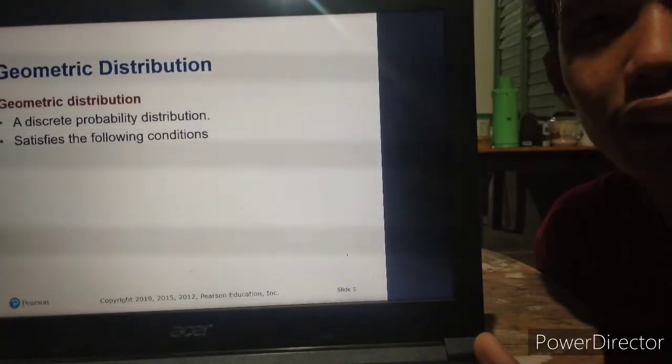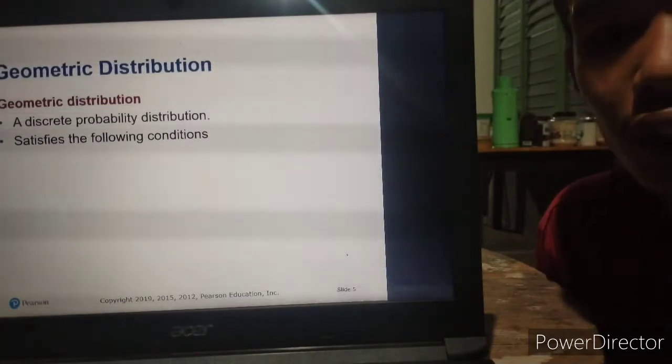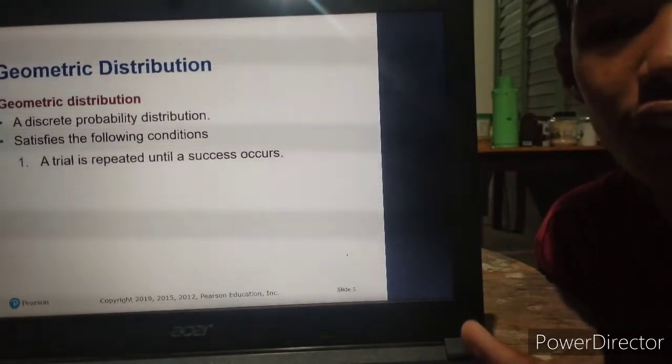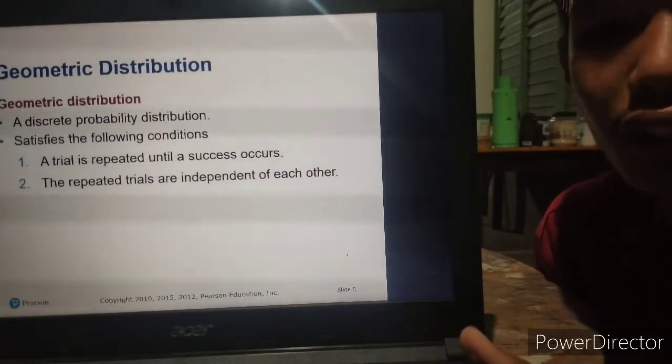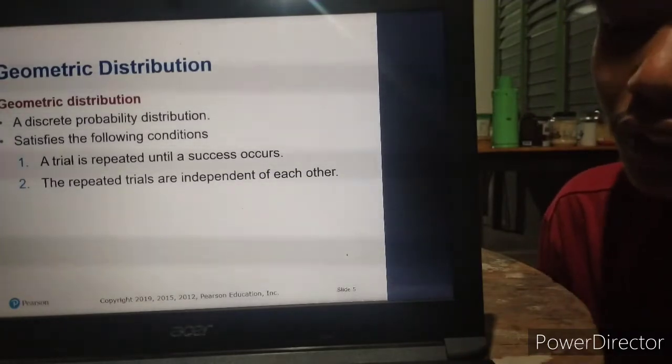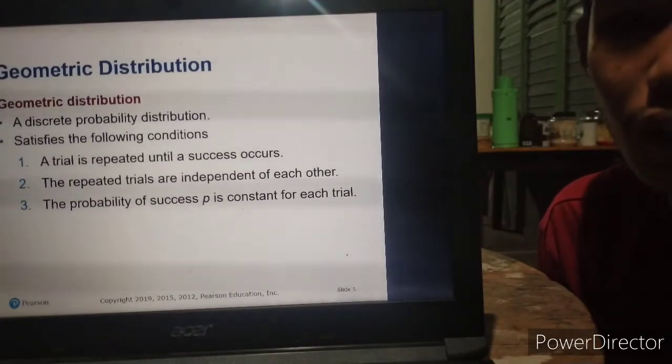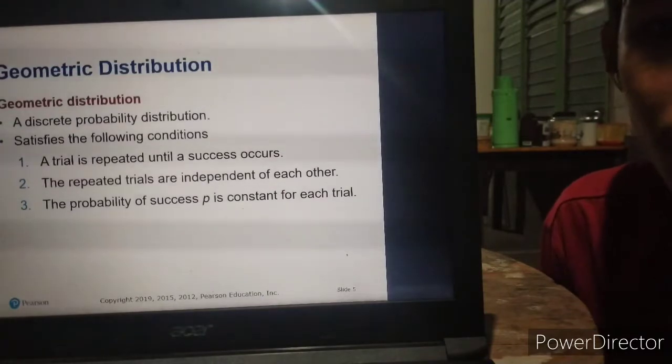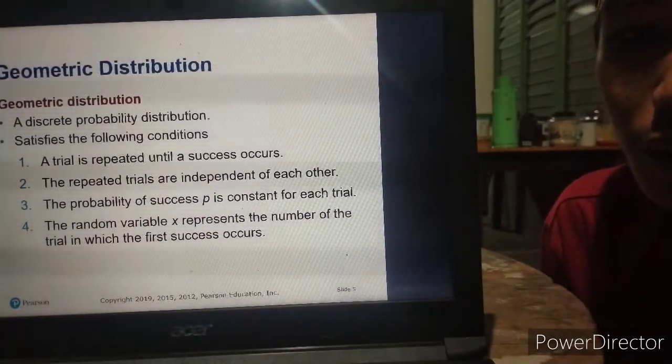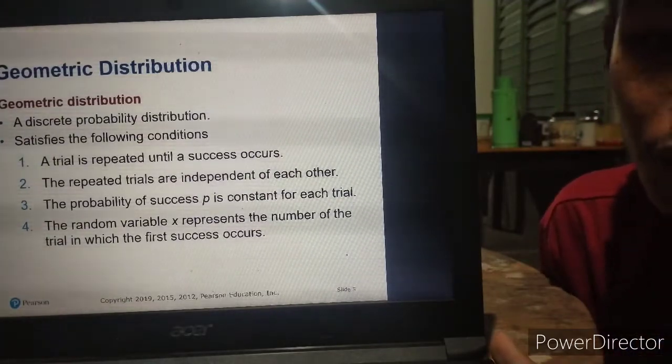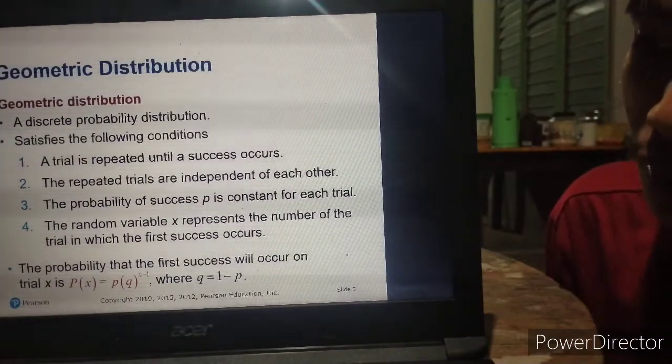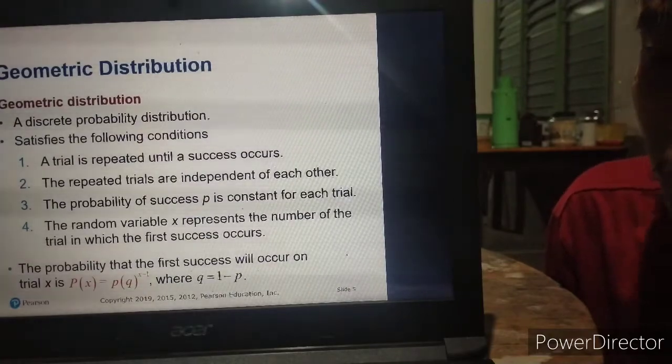We can say that it is geometric distribution if we have these conditions: First, a trial is repeated until a success occurs. Second, the repeated trials are independent of each other, so a trial does not rely on the other trials. Third, the probability of success P is constant for each trial, so all trials have the same success rate. Fourth, the random variable X represents the number of the trial on which the first success occurs. The probability that the first success will occur on trial X is P(X) equals P times Q raised to X minus 1.